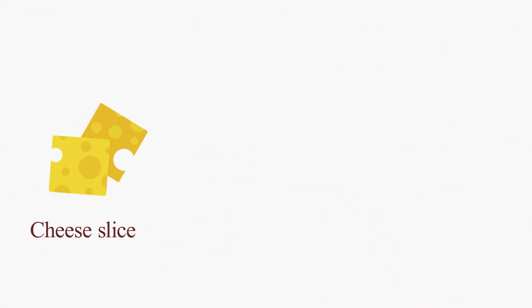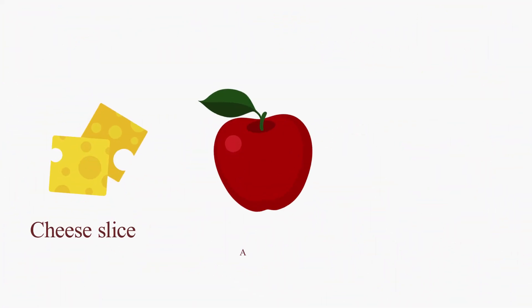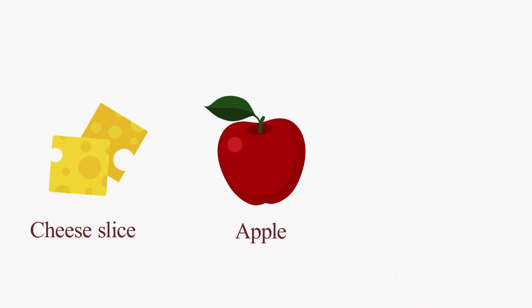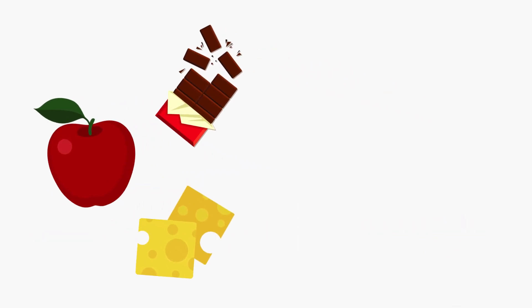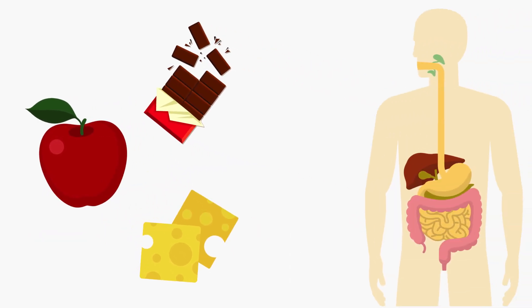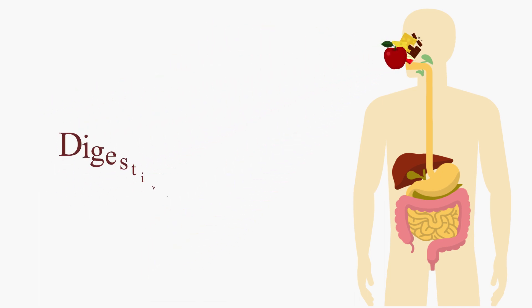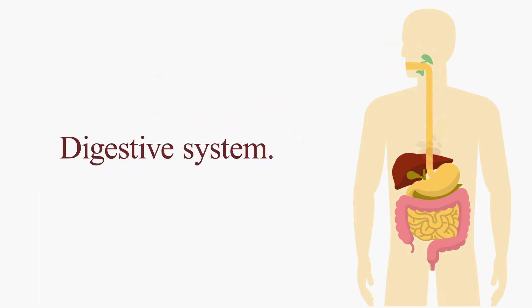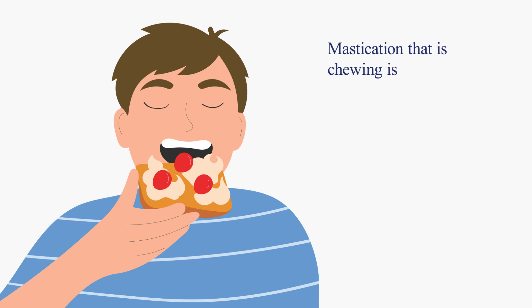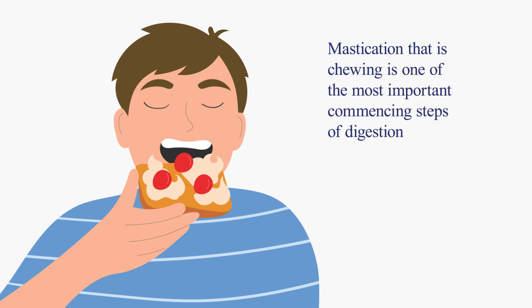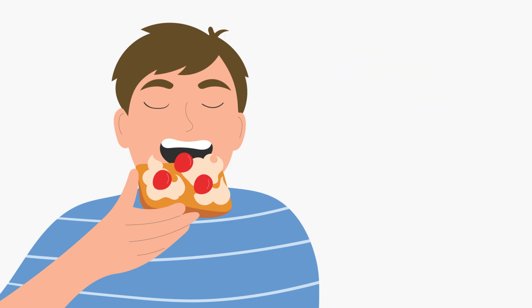A slice of cheese, an apple or a chocolate bar — all these delicious foods we eat have to be broken down before they enter our digestive system. Mastication, i.e. chewing, is one of the most important commencing steps of digestion, and our teeth help in this process.